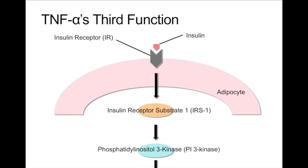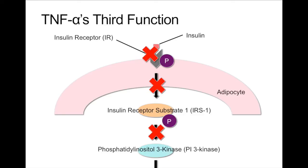In order for glucose to enter cells from the bloodstream, insulin must first bind to its respective receptor and channel a cascade. The phosphorylation by TNF-alpha is a lethal mechanism because it impedes the insulin cascade in two consecutive places. Phosphorylation at the IR causes a conformational change that does not allow insulin to bind to the receptor. And phosphorylation of IRS-1 hinders the stimulation of the next product in the cascade, phosphatidylinositol-3 kinase. This stops the cascade in its entirety.